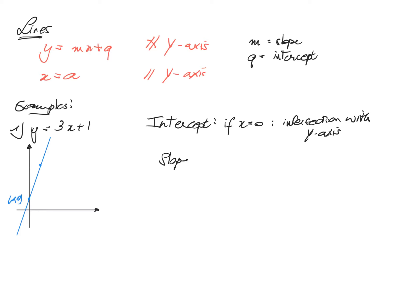For the slope, let us look at what happens if we take one step forward — that is, what happens if x increases by a value of 1. If we go 1 to the right on the x-axis, what then happens with the value on the y-axis? We then go up, in this case a value of 3. So if you move 1 to the right, you go up by 3. The slope tells us what happens after this step to the right.